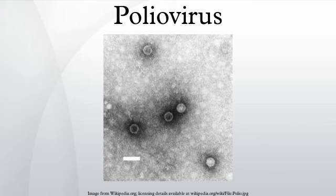Polioviruses were formally classified as a distinct species belonging to the genus Enterovirus in the family Picornaviridae. In 2008, the poliovirus species was eliminated from the genus Enterovirus and the three serotypes were assigned to the species Human Enterovirus C, in the genus Enterovirus in the family Picornaviridae. The type species of the genus Enterovirus was changed from poliovirus to Enterovirus C.